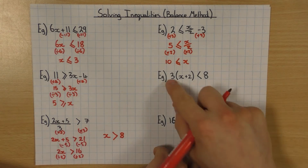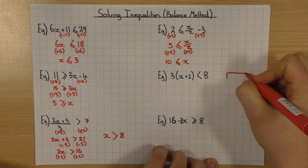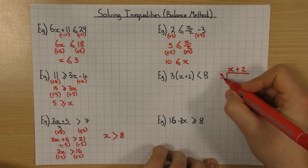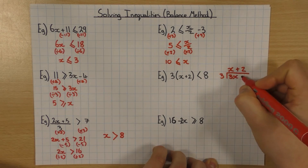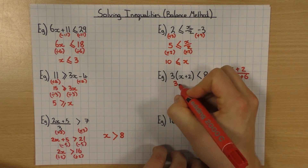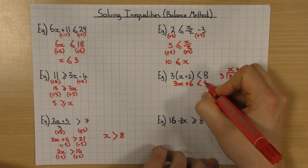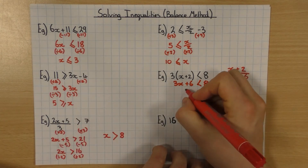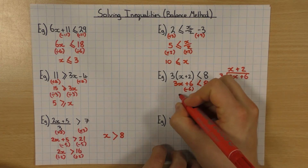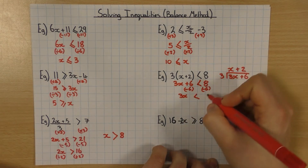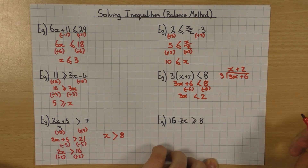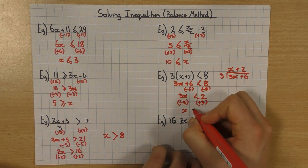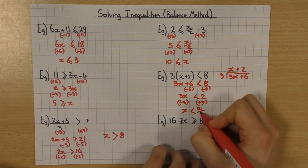This one here — just the same as before when solving equations: if you've got brackets, expand the brackets first. If you're unsure how to expand brackets, make sure you check out the expanding single brackets video. So 3 times x is 3x, 3 times 2 is 6, so 3x plus 6. Inequality sign stays the same, and then I've got 8. I want to get rid of the 6 first, so minus 6 to both sides. That leaves me with 3x, inequality symbol stays the same, 8 take away 6 is 2. Then I want to get rid of the 3 in front of the x so I divide by 3. So x, the inequality symbol stays the same, 2 divided by 3 — leave it as a fraction — 2 thirds.